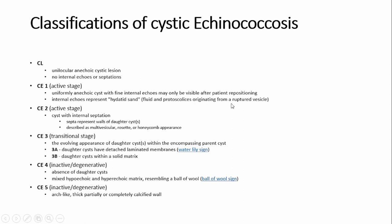You can also find internal echoes represented by a high-density sediment, which is fluid and protoscolices originating from a ruptured vesicle. CE2 is also part of the active stage. In this category, you will see cysts with internal septations. Septa represent walls of daughter cysts. You can also describe multivesicular rosette or honeycomb appearances.